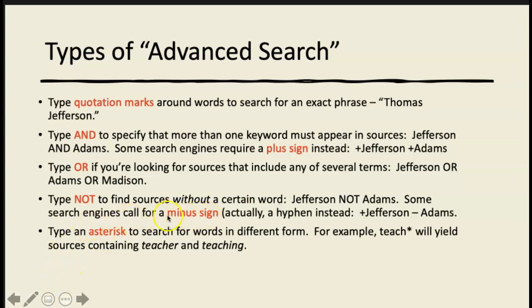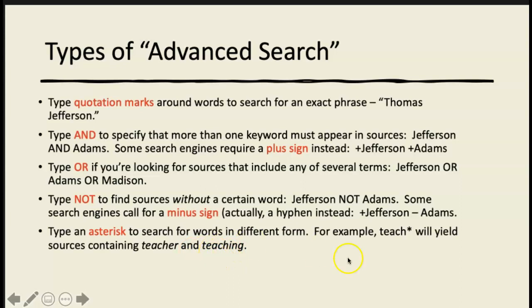Some search engines prefer a minus sign (hyphen) instead of NOT — so you'd type 'plus Jefferson hyphen Adams' to exclude Adams. Another technique: type an asterisk after a word to search for all its forms. For example, 'teach*' will return results containing teach, teacher, and teaching — any derivative of that word. So quotation marks, AND, OR, NOT, and the asterisk are all tips and tricks you can use.